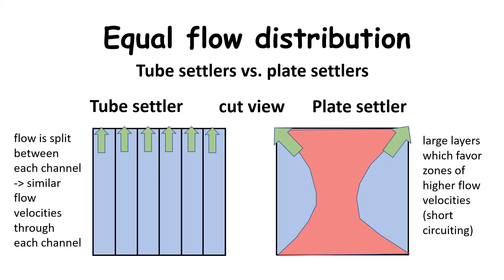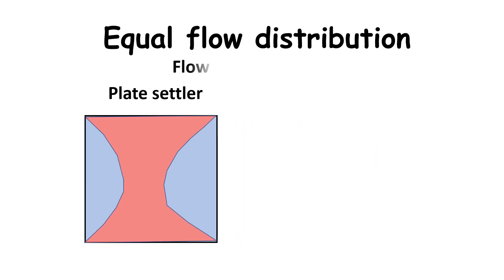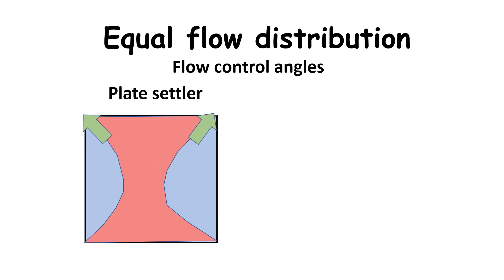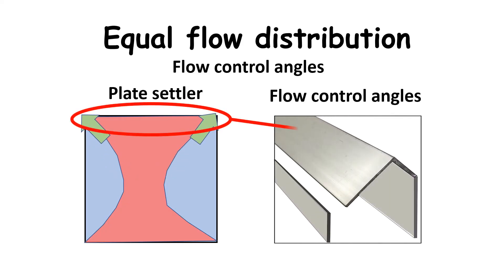If this happens, the settling surface area of plate settlers is not fully utilised so that the clarifier capacity can decrease significantly. Some plate settler manufacturers are aware of this problem and try to overcome the short-circuiting by reducing the channel sizing and adding flow control angles at the top of the plate to limit water flow in certain areas.